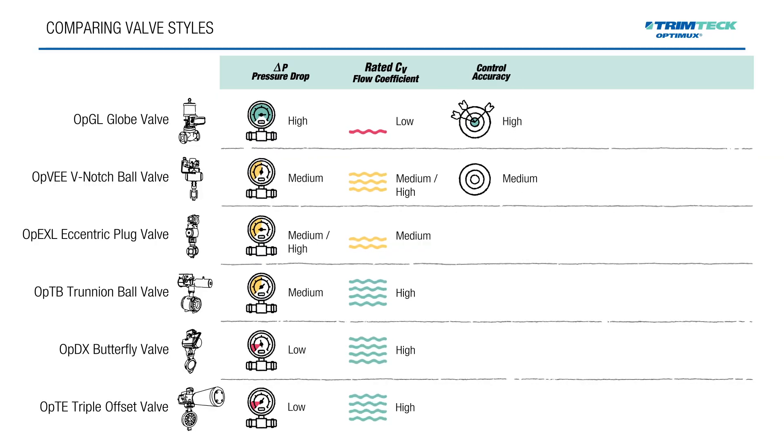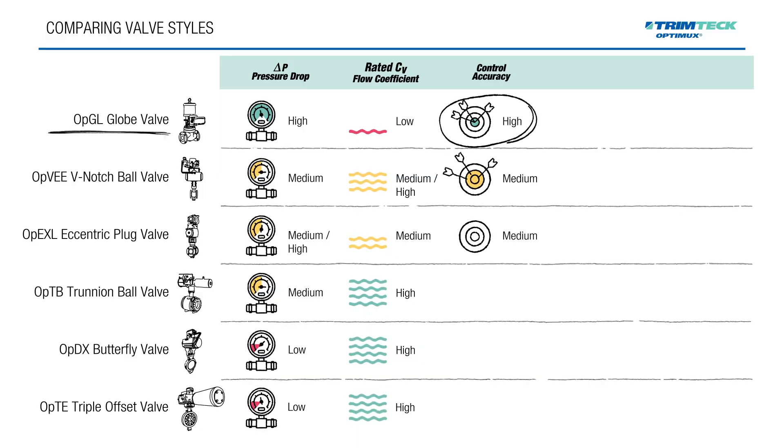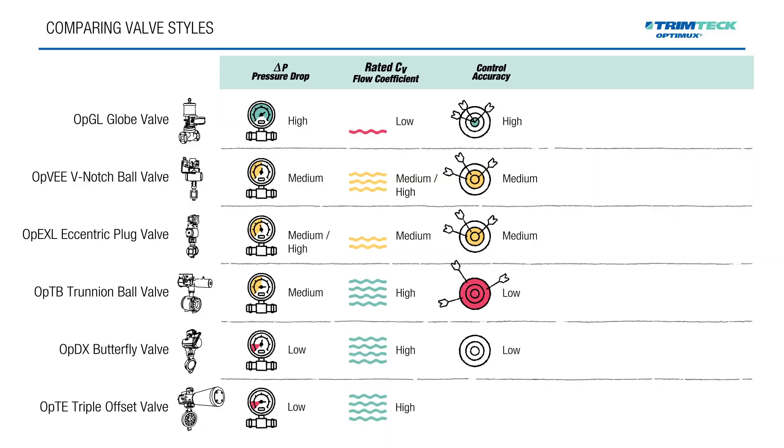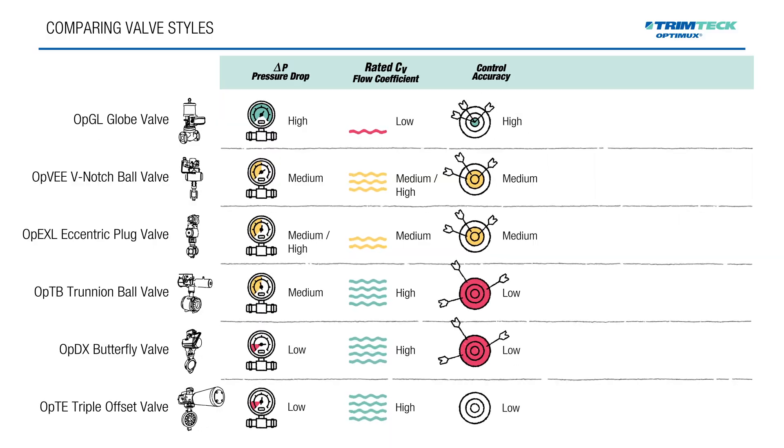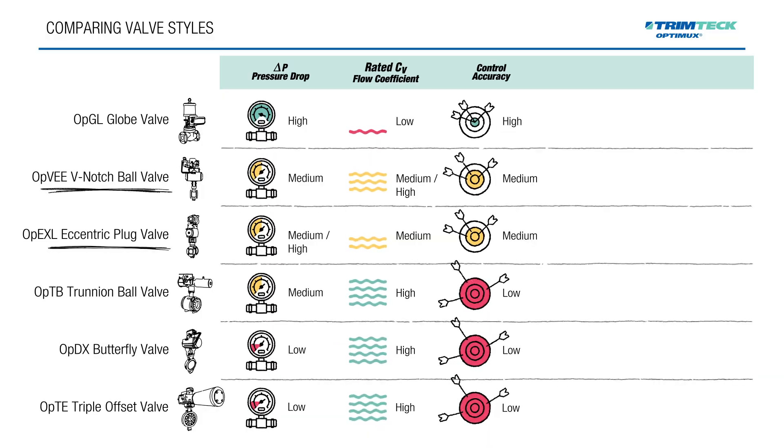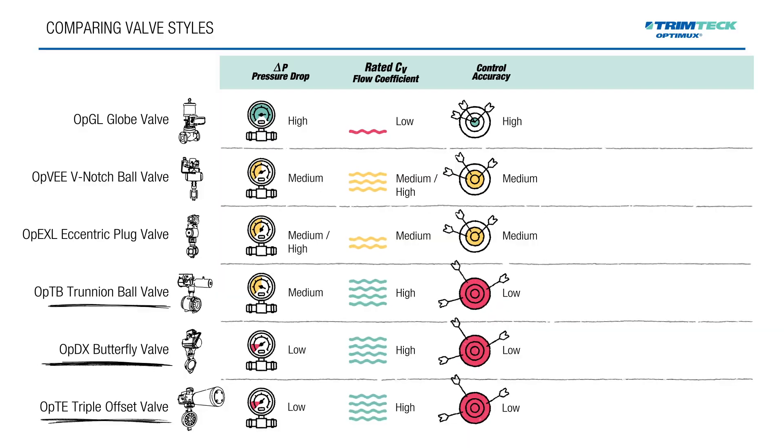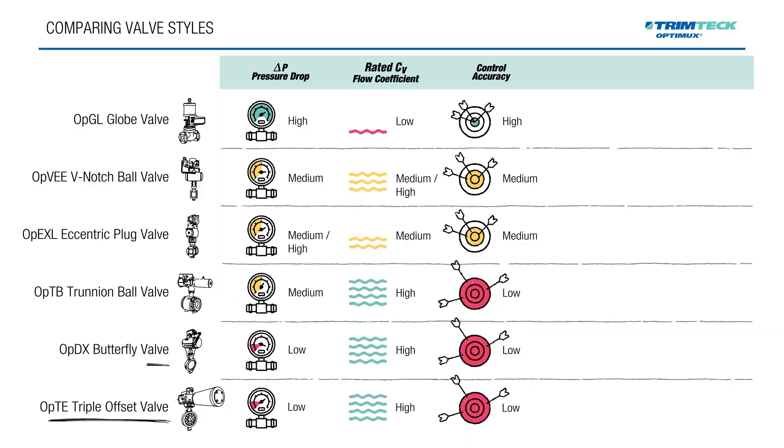Control accuracy is a key factor for many critical applications. Globe valves, especially with custom engineered trims, offer the most precise control thanks to their linear motion and consistent flow characteristics. Rotary valves like V-notch ball and eccentric plug are also accurate, but generally a step behind globes. Trunnion ball and butterfly valves offer less precision, but still work well for many modulating duties.